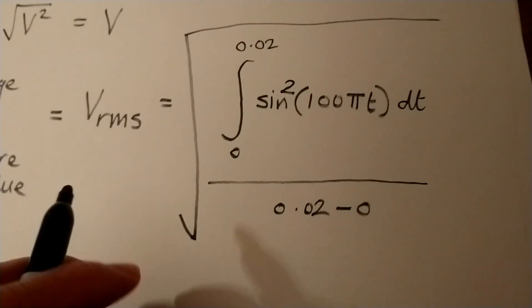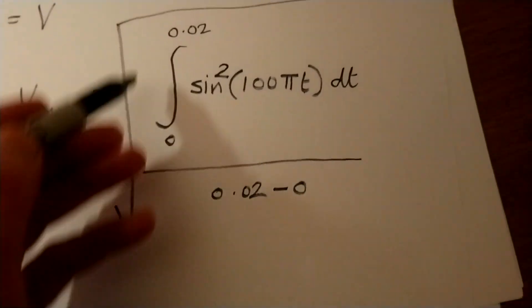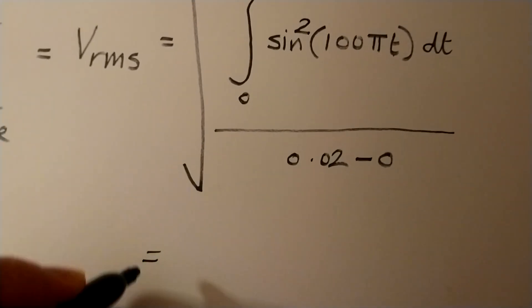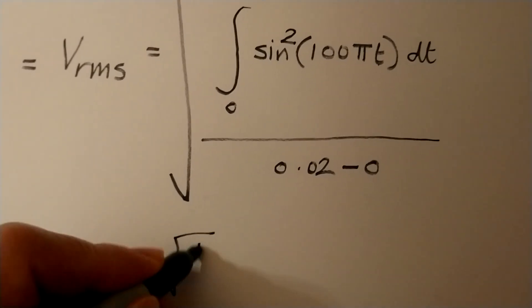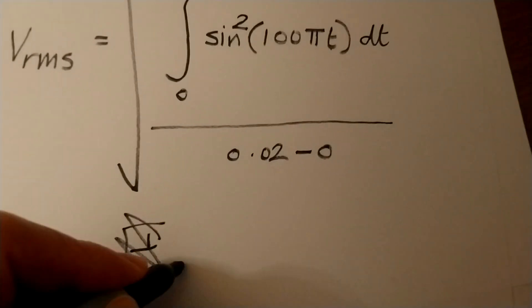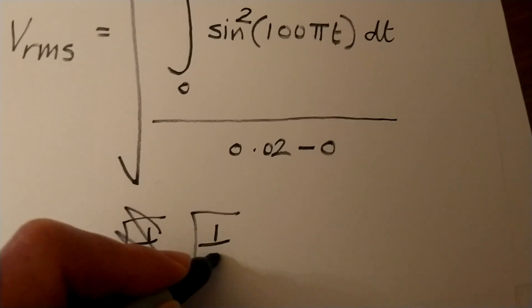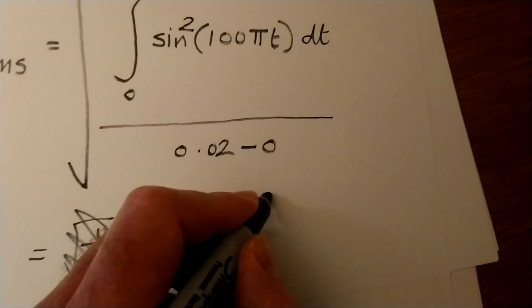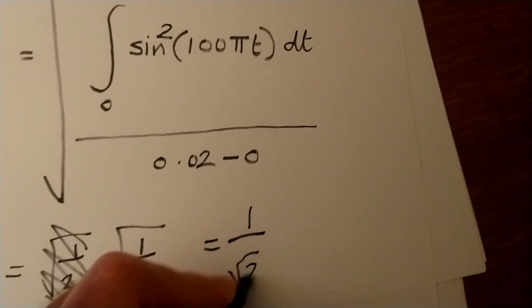Now we've already worked out that the mean square voltage, the bit in the square root, is equal to a half. So that's going to be equal to the square root of a half. Whoops, that didn't work very well. Equal to the square root of a half, which is 1 over root 2.